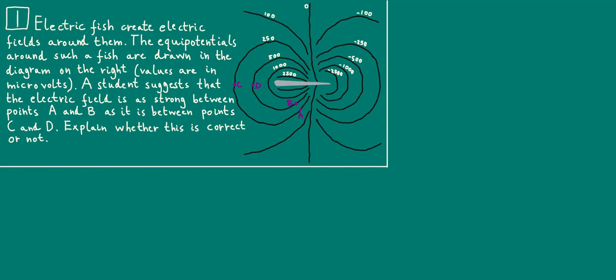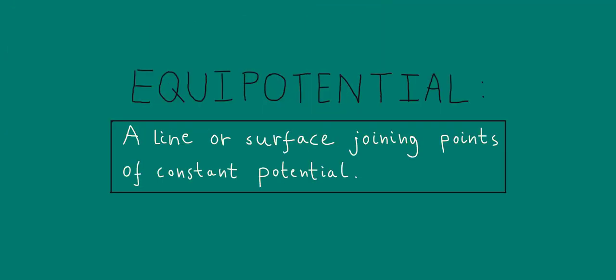Okay, welcome back. Most of the time, in questions on electric or gravitational fields, if you're given a diagram representing the field, the diagram will show field lines. In contrast, the diagram in the question is only showing equipotentials — the black curves drawn around the fish. Remember that an equipotential is a line or surface joining points of constant potential. For our purposes, because we're talking about electric fields, potential here refers to electric potential.